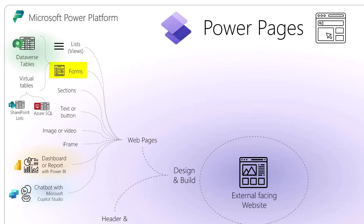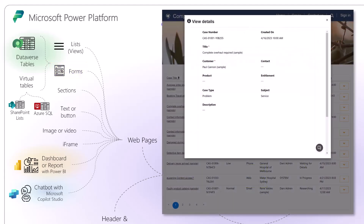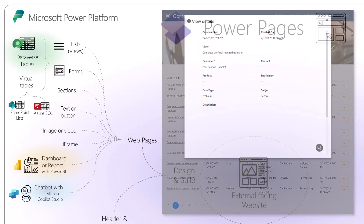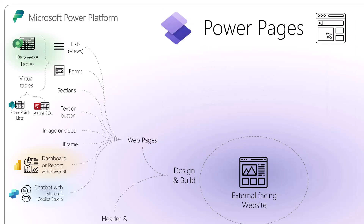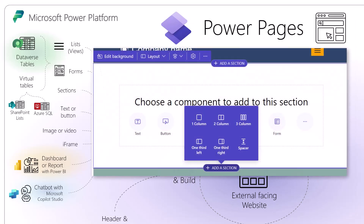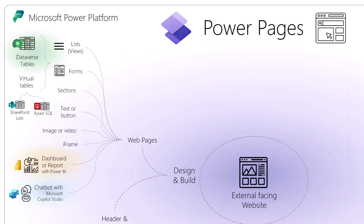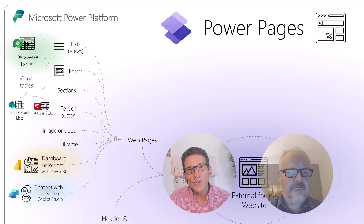The form component interacts with your records by overlaying a form where you can create, edit, and view more details about each record. You can add sections to play with the layout of your web page and place specific elements in specific sections. You can of course also add text, buttons, images, video, iframes, and so forth.